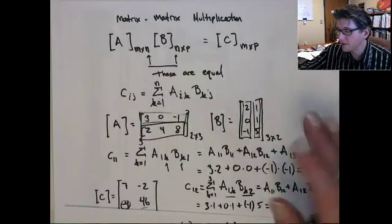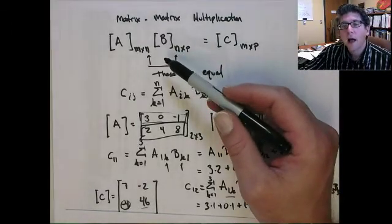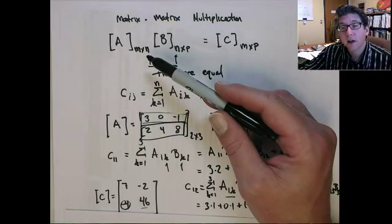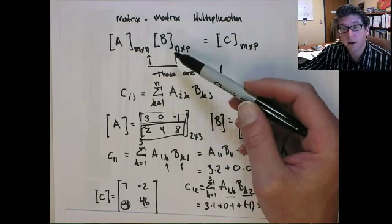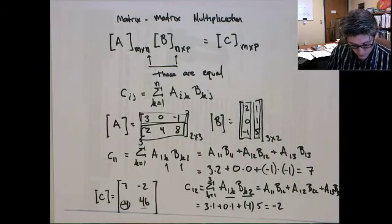And absolutely, essentially, you need to know, at a minimum, to have matrix-matrix multiplication, that you have to have the correct inner dimensions. So the number of columns of A has to equal the number of rows of B. Okay? Well, good luck.